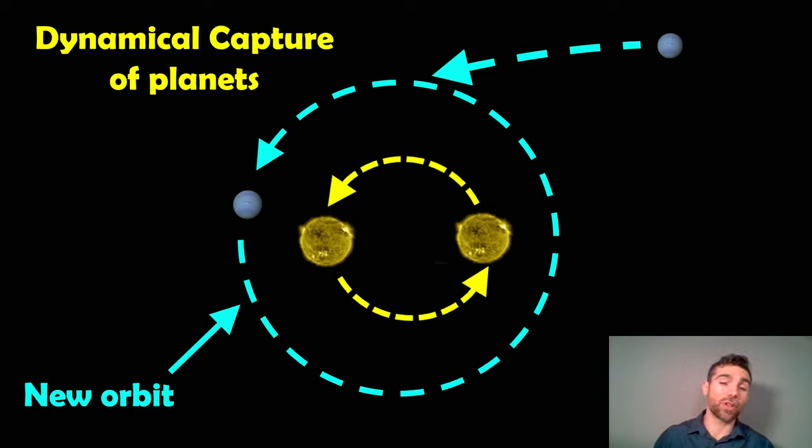Like the star that gets captured around another star, you can get the dynamical capture of a planet—a rogue planet that was maybe thrown out of its system. It came close enough to be gravitationally captured by the binary star system and you end up with a planet around the outside.